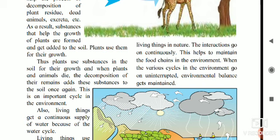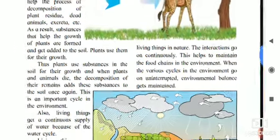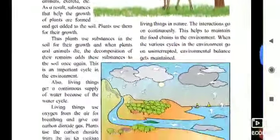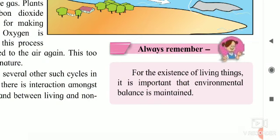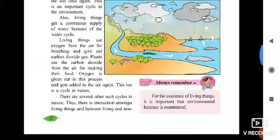In nature there are many cycles — interactions between living and non-living things that never stop. Because of this, the food chain in the environment is maintained. If this environmental balance is not disturbed, balance in the environment will also be maintained. Always remember: for the existence of living things, it is important that environmental balance is maintained. If living things want to live well, the environment must be kept in balance.